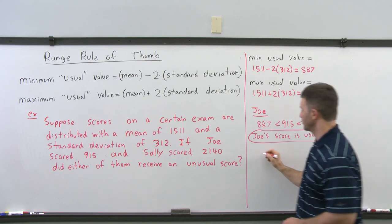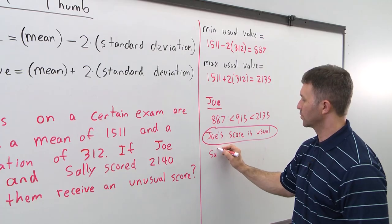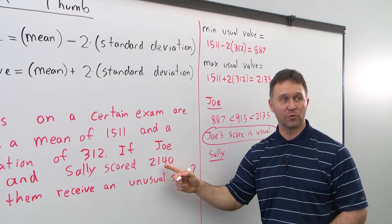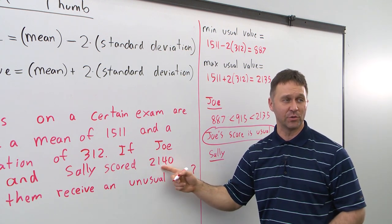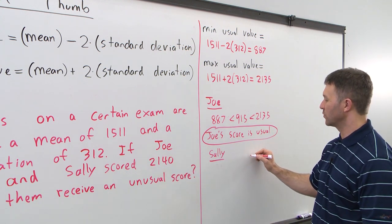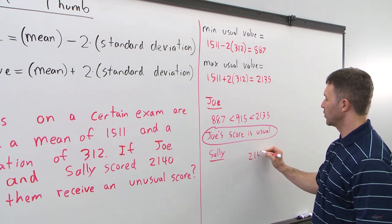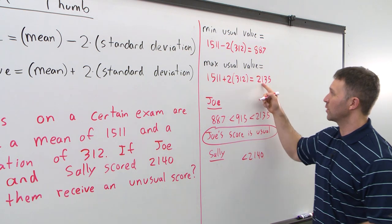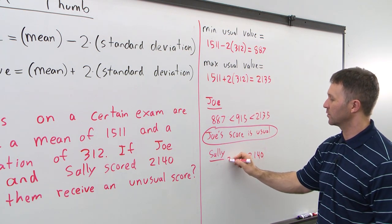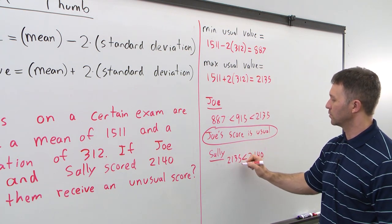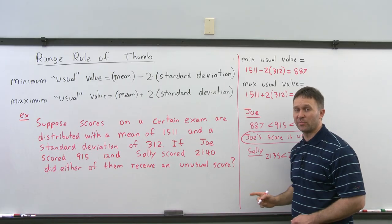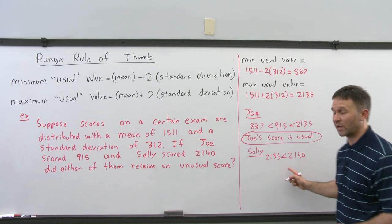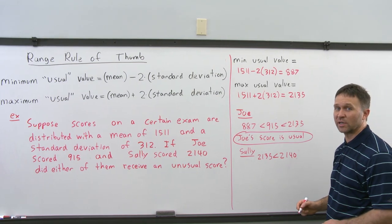Now let's look at Sally. Sally's score was 2140, which is bigger than the max usual value of 2135. Since Sally scored higher than the max usual value, we say that Sally's score is unusual.